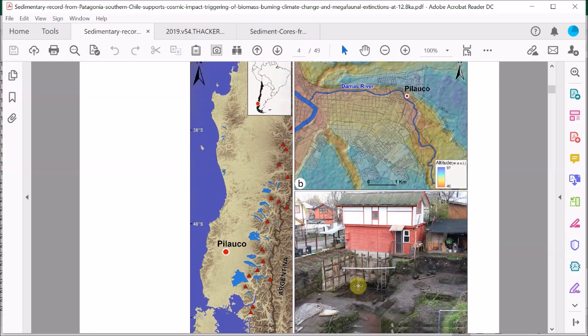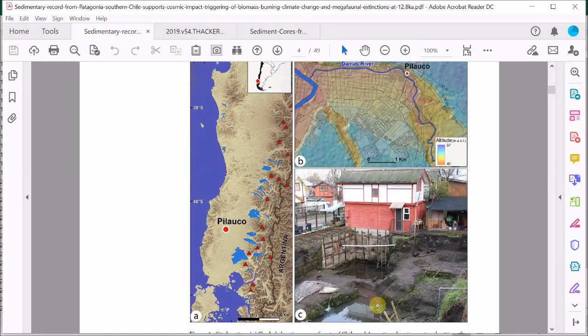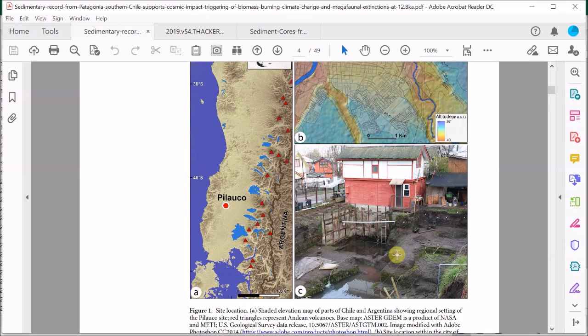So you can see the archaeological trenches in this suburb of the city next to this house. I wonder what the people think who are living here. Anyway, this is a nice paper because they've got a lot of evidence.